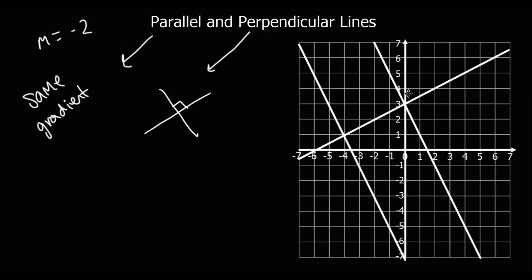The perpendicular lines have got to kind of do the opposite thing. So if this one goes along 1 down 2, this one's got to go across 2 and up 1 — it's got to do the opposite thing. And that's the only way it's going to meet at a 90 degree angle. So what's the gradient of this perpendicular line? For every one it goes across, it goes up half. If it goes across 2 and up 1, that means across 1, up half.